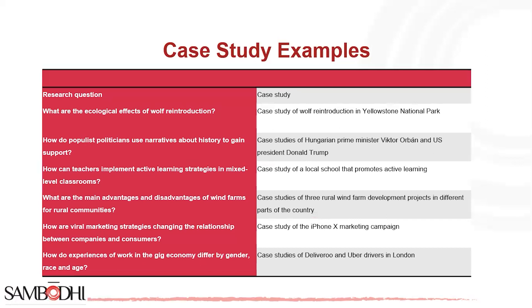What are the ecological effects of wolf reintroduction? — Case study of wolf reintroduction in Yellowstone National Park. How do populist politicians use narratives about history to gain support? — Case study of Hungarian Prime Minister Viktor and US President Donald. How can teachers implement active learning strategies in mixed-level classrooms? — Case study of a local school that promotes active learning. What are the main advantages and disadvantages of wind farms for rural communities? — Case studies of three rural wind farm development projects in different parts of the country.